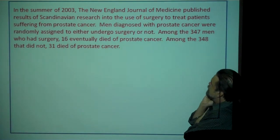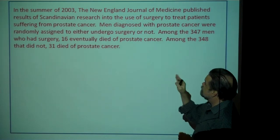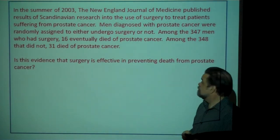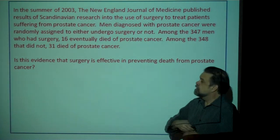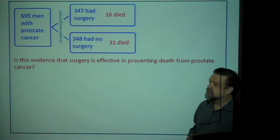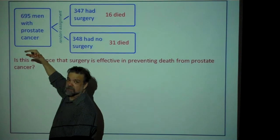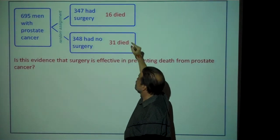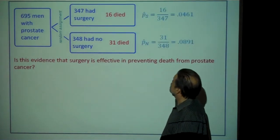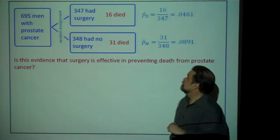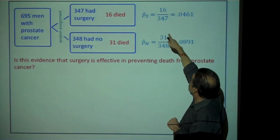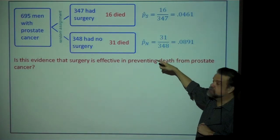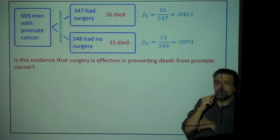This is an experiment where we randomly assigned people to either the treatment group — surgery — or the non-treatment group — no surgery. Among the 347 who had surgery, 16 eventually died of prostate cancer. Among the 348 who did not have surgery, 31 died. This gives us two different p-hats: the sample proportion for the surgery group is 0.0461, and the sample proportion for the no-surgery group is 0.0891.